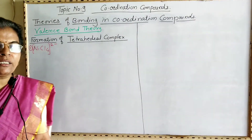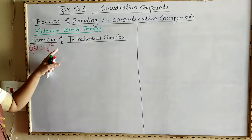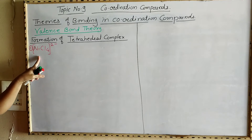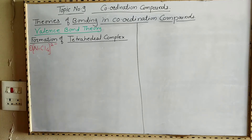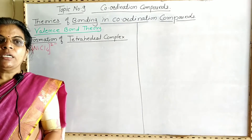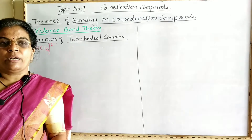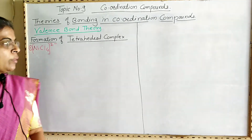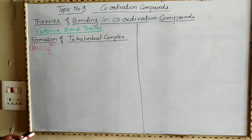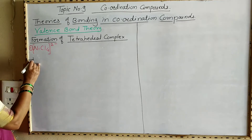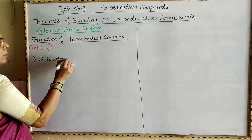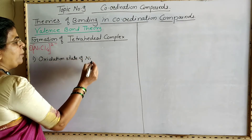Now we are going to look at the formation of NiCl₄²⁻. Here we use the high spin and low spin terms only for octahedral complexes, not for complexes having coordination number 4. The oxidation state of Ni in this complex is +2.